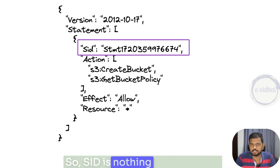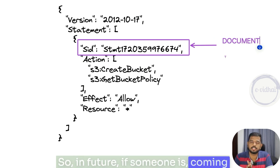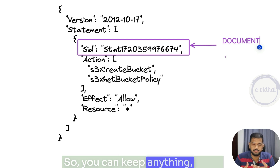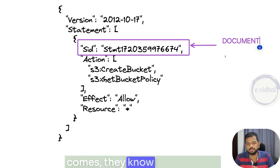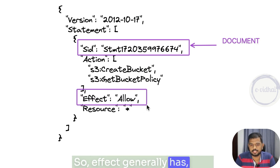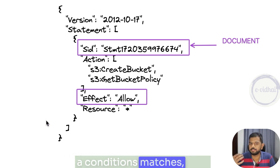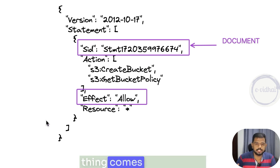If you go with add statement, a generated policy shows how an IAM policy looks in general. The first field is the SID — nothing but a unique statement ID for documentation purposes. In the future, if someone reads your policy, they need to know what this specific policy statement does, so you can name it something like 'create policy' so team members know what exactly this statement is meant to do. Then you see something called effect. The effect generally has two values: either allow or deny. If specific conditions or actions match, then what should be the end result — do you want to allow the call or completely deny it?